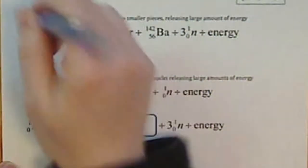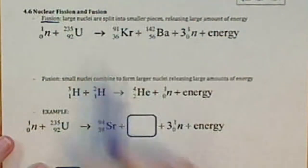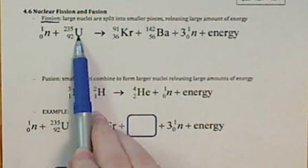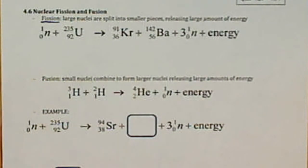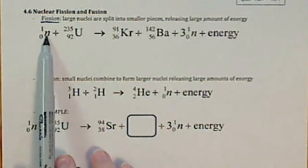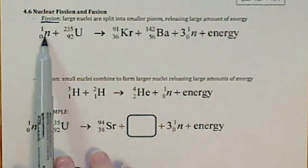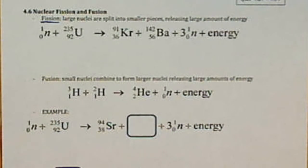Fission is where we take a large nuclei. Usually it's an isotope of uranium. And we split that into smaller nuclei. And the way that we split it is we fly a small particle, in this case a neutron, at this radioactive isotope.